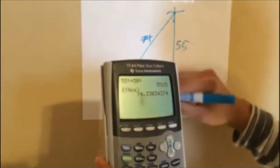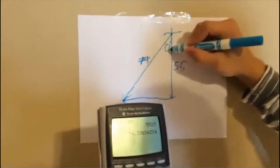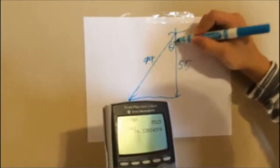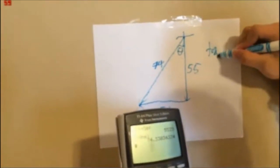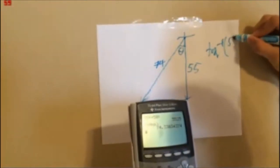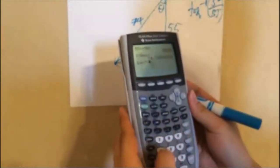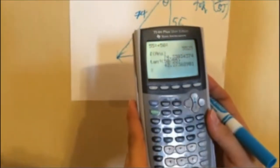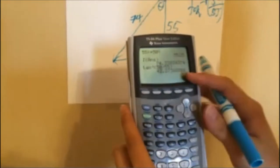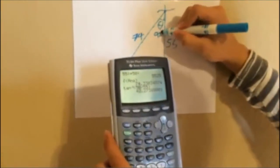Now that we have the distance, we need the direction. So I am going to look for the angle. I am going to use inverse tan of 50 over 55, which rounds out to 42 degrees.